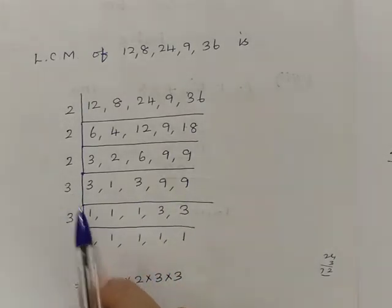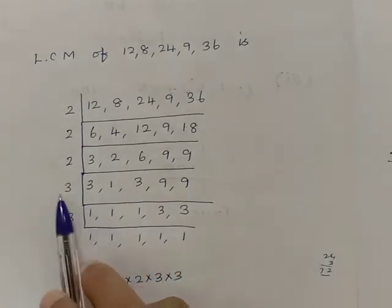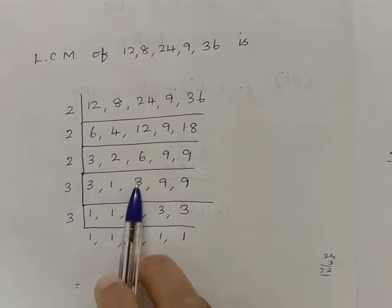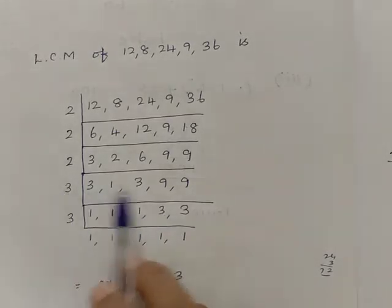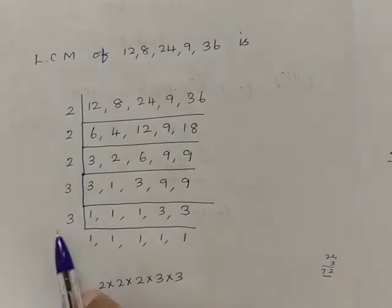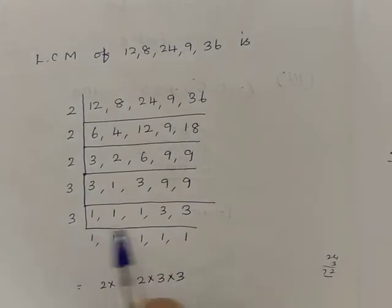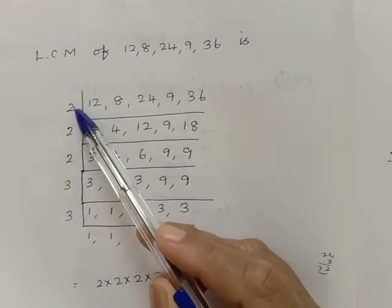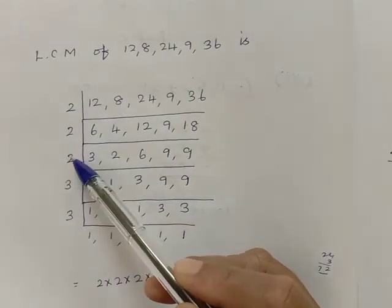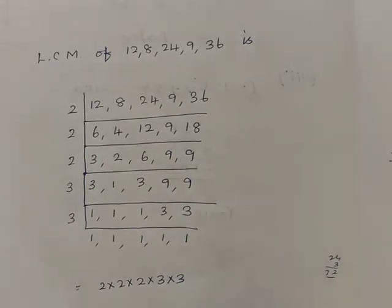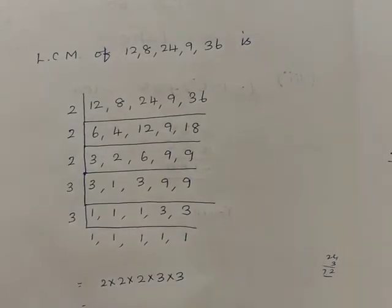Now by the 3 times table: 1 threes are 3, 1 threes are 3, 3 threes are 9, 3 threes are 9. Again: 1 threes are 3, 1 threes are 3. So the LCM is 2 × 2 × 2 × 3 × 3, therefore LCM is 72.